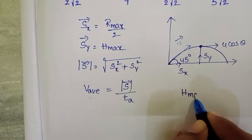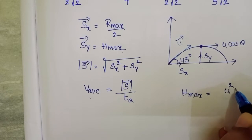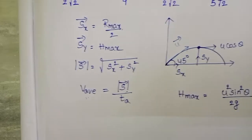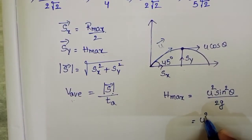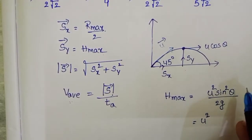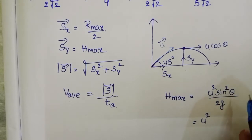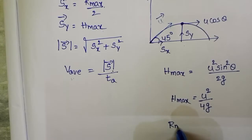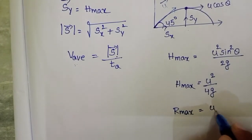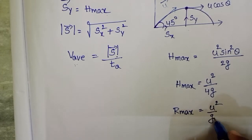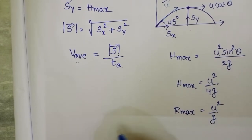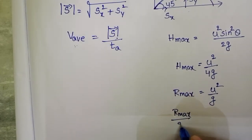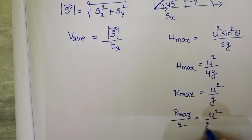H_maximum equals u² sin²θ divided by 2g. With θ = 45°, sin 45° = 1/√2, so sin²45° = 1/2, giving H_maximum = u²/4g. R_maximum equals u²/g because sin 2θ = sin 90° = 1. Therefore R_maximum/2 equals u²/2g.